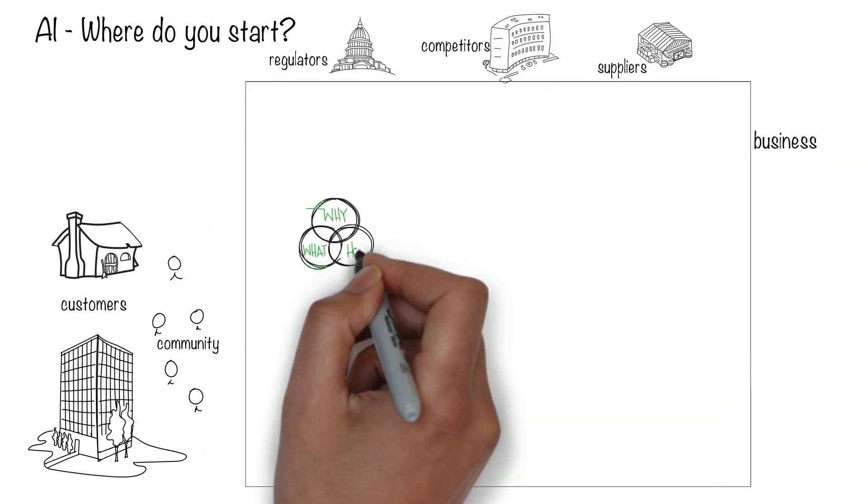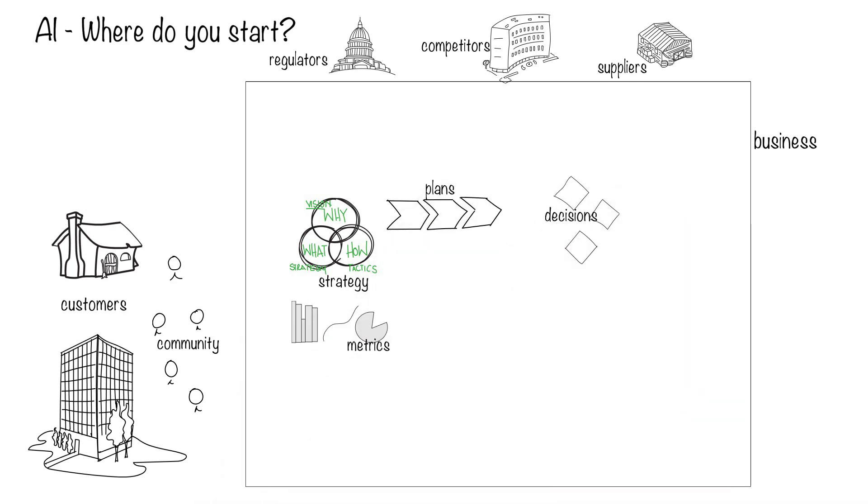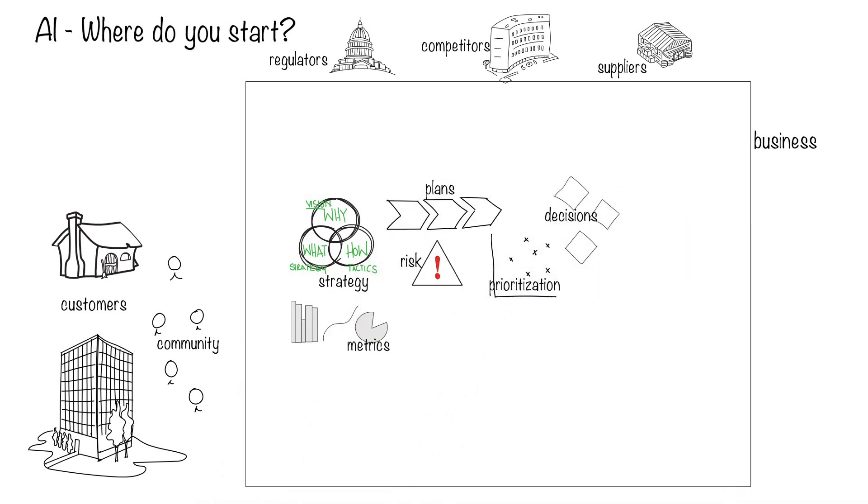Internal elements include things like vision, strategy, plans, decisions, metrics and measures, risk, prioritization, and governance.